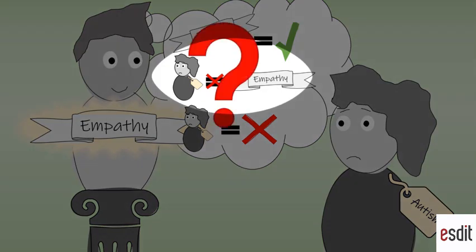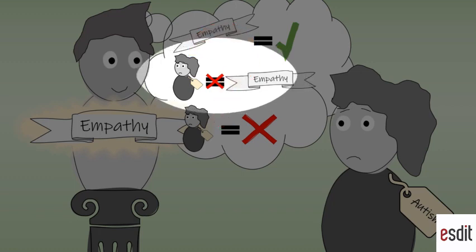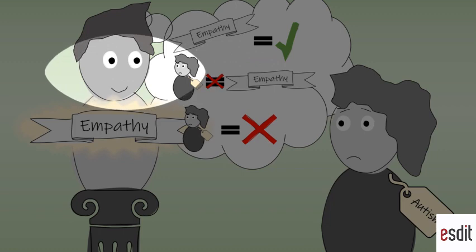But are they actually less empathetic, or are they victims of exclusion and bias? And those who score high in these experiments, how empathetic are they towards neurodivergent people?